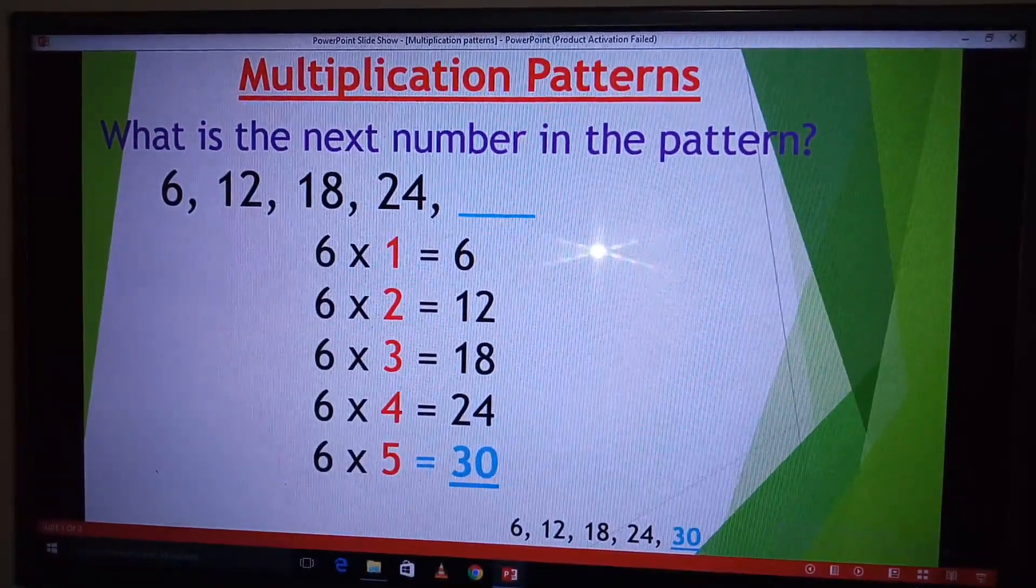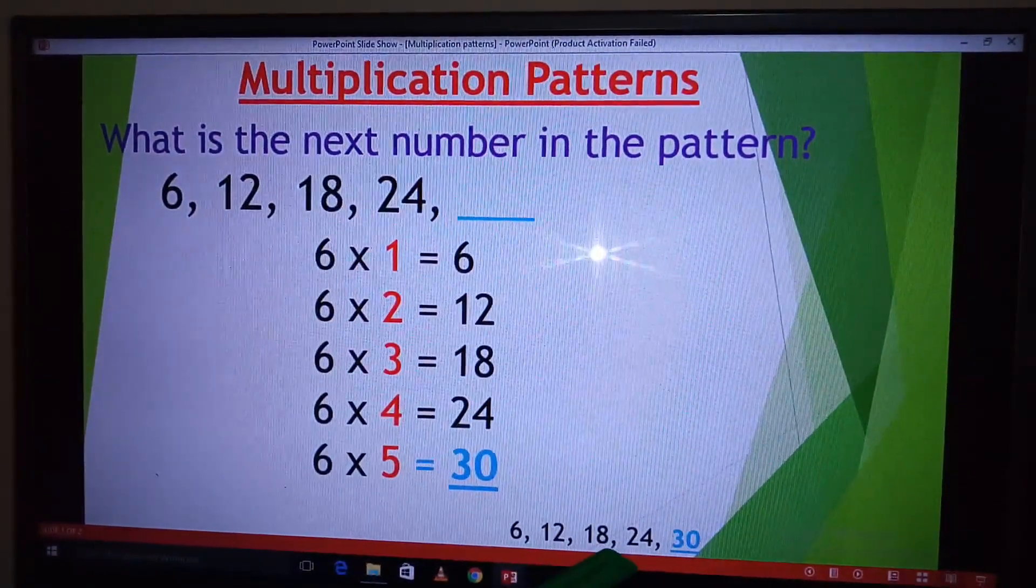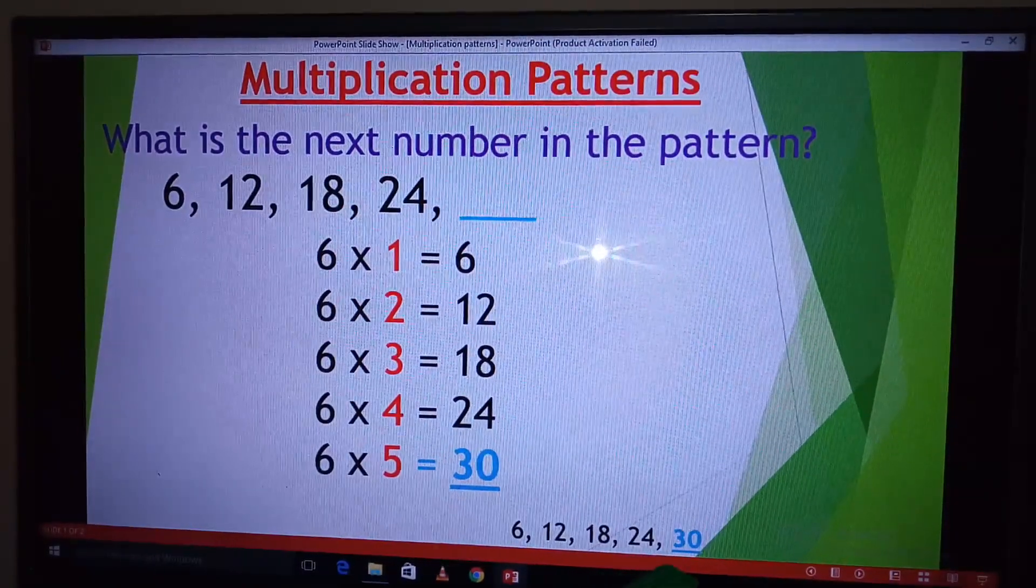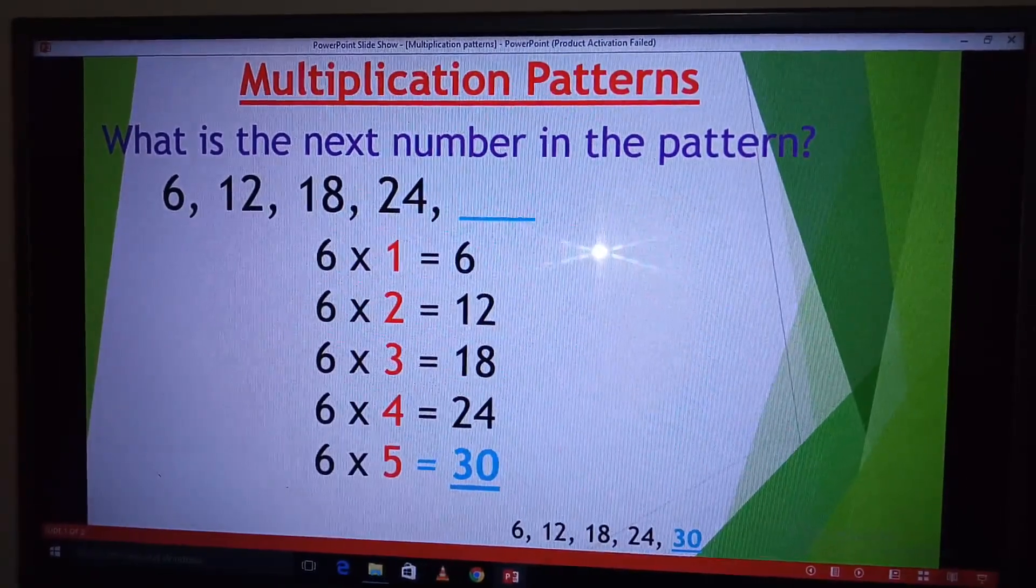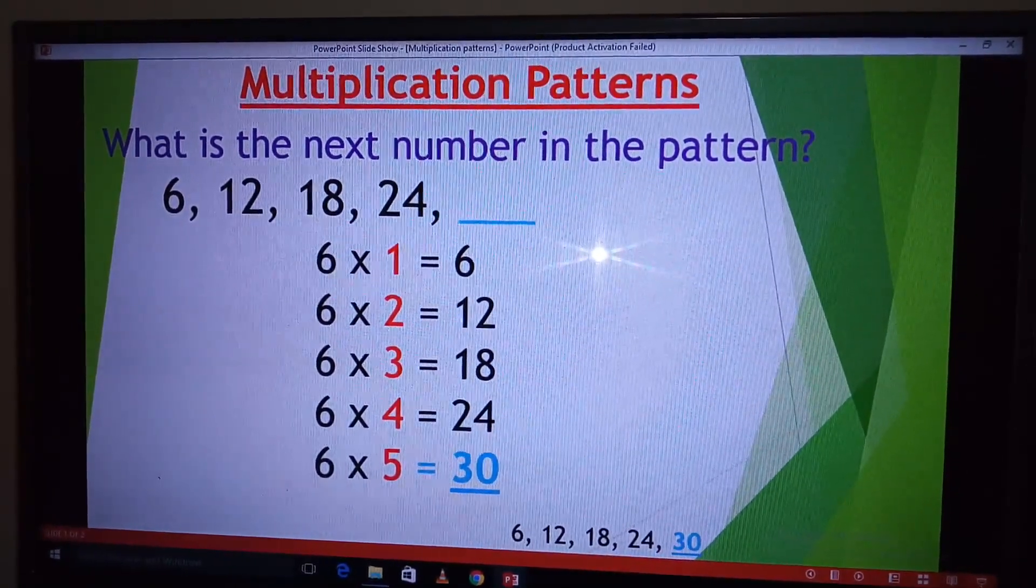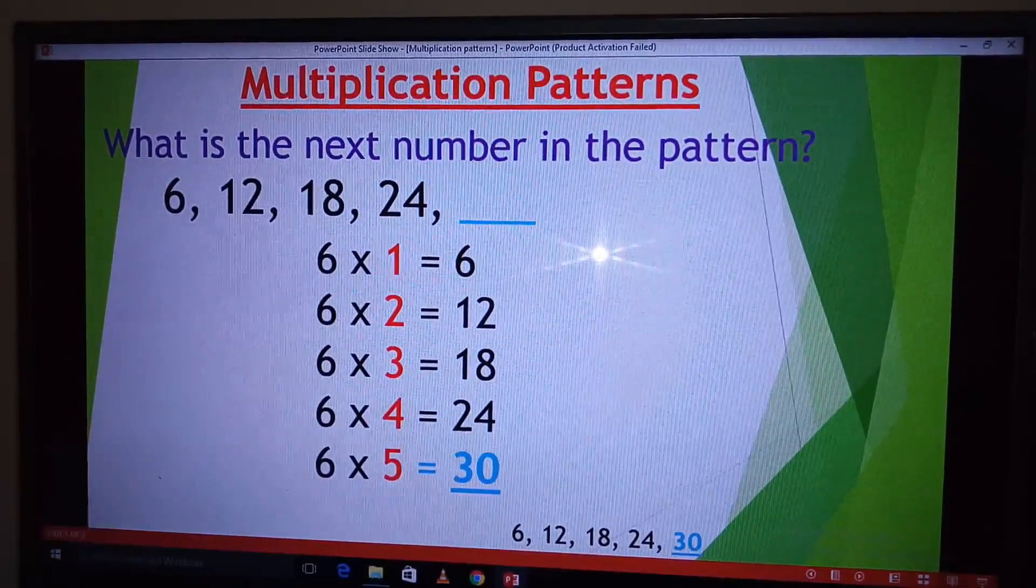So our next number in the pattern 6, 12, 18, 24 will be 30. You can get as many numbers as you can in the pattern. But for our case today, we only need one next number.